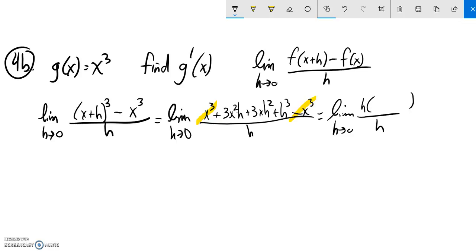If I do that, I'm left with 3x squared plus 3xh plus h squared. So this h divides out, so I'm left with the limit as h approaches 0 of 3x squared plus 3xh plus h squared.